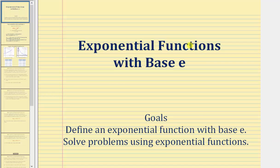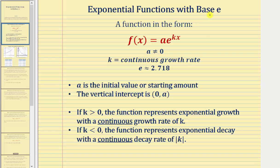Welcome to a lesson on exponential functions with base e, sometimes referred to as the natural exponential function. An exponential function with base e is in the form f of x equals a times e raised to the power of kx, where a can't equal zero because if it did, we'd have a constant function. k is equal to the continuous growth rate, and the base e is an irrational constant approximately equal to 2.718, often referred to as Euler's number.